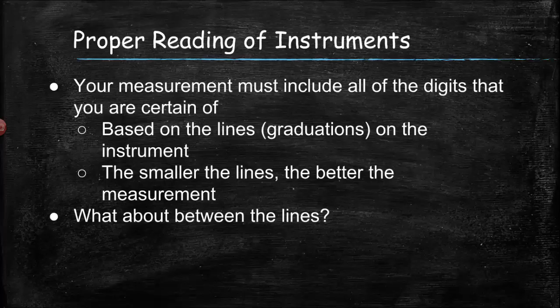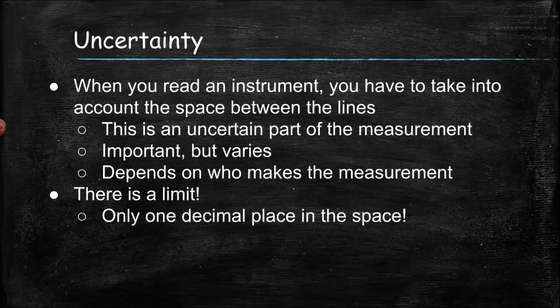That's what you learn how to do first — you read the lines. But what happens if it's between the lines? We can get a better measurement if we have smaller distances between the lines, but we have to talk about between the lines. Most people ignore that entirely, and you're not allowed to ignore the section between the lines, because that's the uncertainty of a measurement.